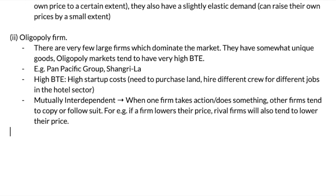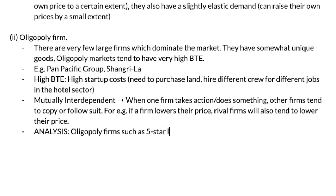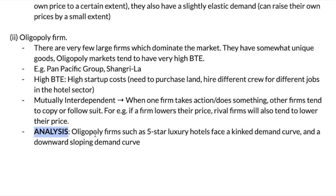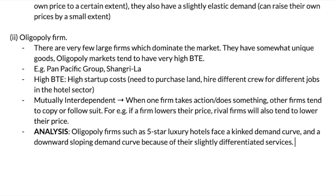That is all you need to actually write out. Lastly, you can also include your analysis. If you want, you can draw out the oligopoly diagram. Oligopoly firms such as five-star luxury hotels face a kinked demand curve and a downward sloping demand. A kinked demand curve basically means there's a certain zone where firms, no matter how much they lower their price, it won't affect their quantity or their business or other firms. They also face a downward sloping demand curve because of their slightly differentiated products or services — for example, Shangri-La may offer you a free spa, whereas Pan Pacific Hotel may not. These are the slight differences these five-star hotels have.